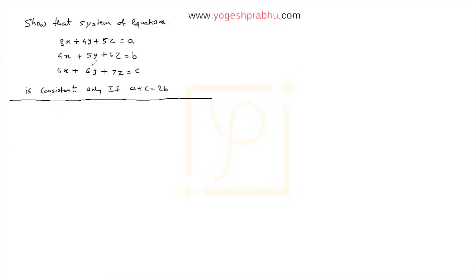Let's see how we can solve this question. We have a system of linear equations with all three equations given here. The question is to check that the equations are consistent only if the condition a + c = 2b is satisfied. This is something we have to prove.